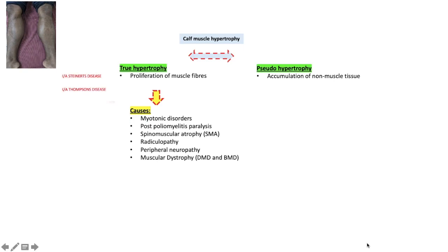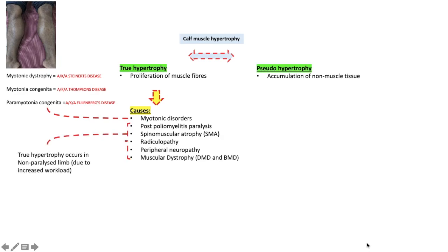These are some of the myotonic disorders with their common names. Post-poliomyelitis paralysis, spinal muscular atrophy, radiculopathy, peripheral neuropathy, and muscular dystrophies cause true hypertrophy because of proliferation of the underlying remaining skeletal muscle fibers.